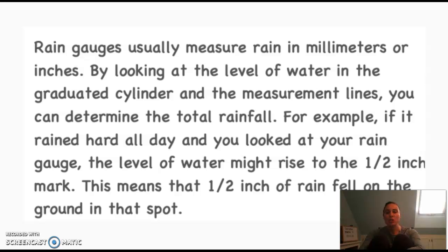Rain gauges usually measure rain in millimeters or inches. Raise your hand if you remember learning about that in math last week. By looking at the level of water in the graduated cylinder—a graduated cylinder must be a tool—and the measurement lines, you can determine the total rainfall.